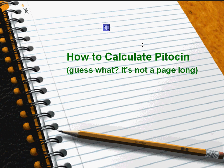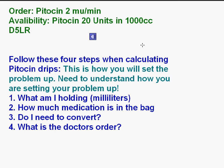This will be a lesson on how to calculate Pitocin, and it will not be a page long. The first thing we'll look at is our order. Pitocin is ordered at 2 million units a minute. The availability of Pitocin is 20 units in 1,000 cc's of D5LR.